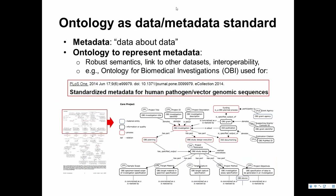Ontology can also be used as a data or metadata standard. Metadata is basically data about data, and ontology can be used to represent it. For example, there is a paper from OBI — the Ontology for Biomedical Investigations — used to represent human pathogen or vector genome sequences, representing that information in a clever ontological format so that relations among terms in the metadata can be better understood.